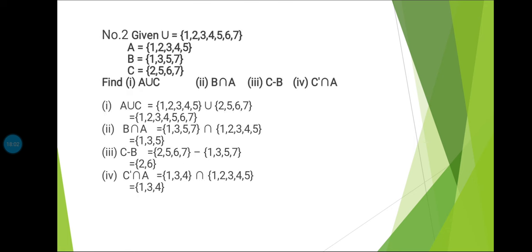Problem 2: Given U = {1,2,3,4,5,6,7}, A = {1,2,3,4,5}, B = {1,3,5,7}, C = {2,5,6,7}. Find: (1) A∪C, (2) B∩A, (3) C minus B, (4) C dash intersection A. First, A∪C = {1,2,3,4,5} ∪ {2,5,6,7} = {1,2,3,4,5,6,7}. Second, B∩A = {1,3,5,7} ∩ {1,2,3,4,5} = {1,3,5}.